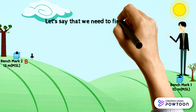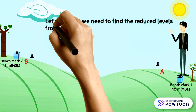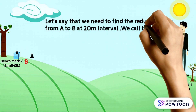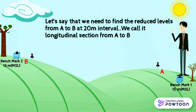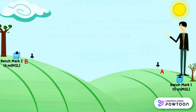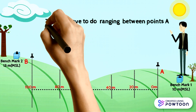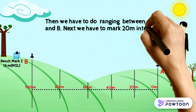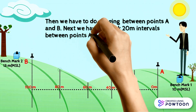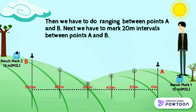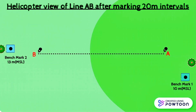Let's say that we need to find the reduced levels from A to B at 20 meter intervals. We call it a longitudinal section from A to B. Then we have to do ranging between point A and B, and mark 20 meter intervals. Here you see AB as a straight line with points marked on the ground at 20 meter intervals.